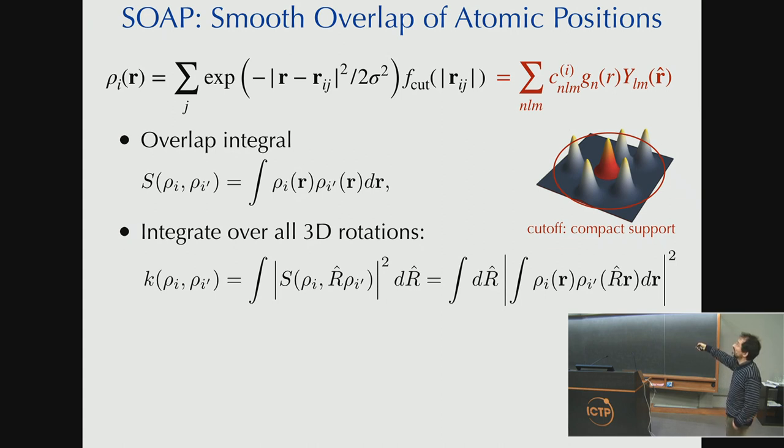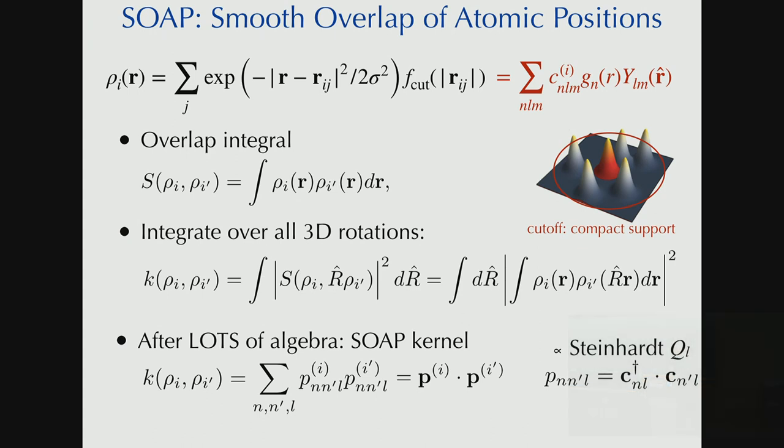But it turns out that if you expand this neighbor density into spherical harmonics, taking your favorite radial basis set, I'm calling it GN here, YLM are spherical harmonics, you have some CNLM expansion coefficients. It turns out after rather a lot of algebra that this integrated overlap is exactly equal to the dot product of what we call a power spectrum, P, which is just C dagger C. Okay, so contemplate this for a few seconds.